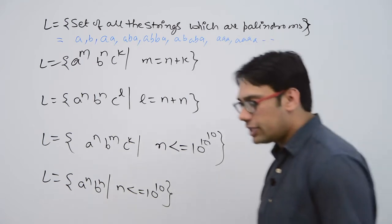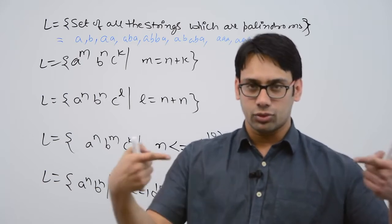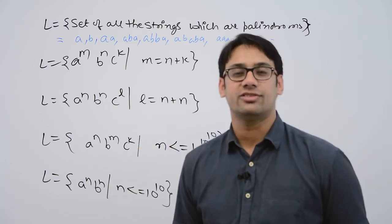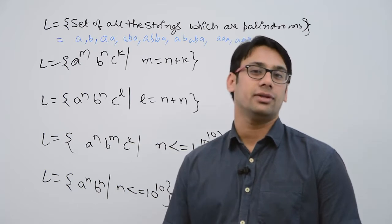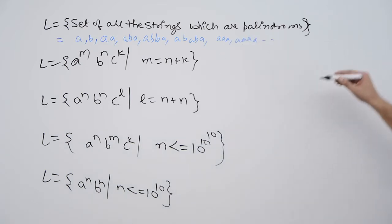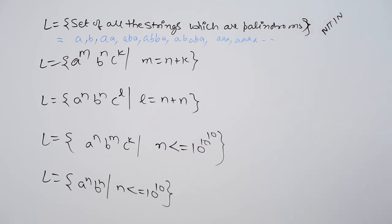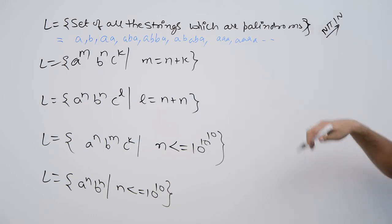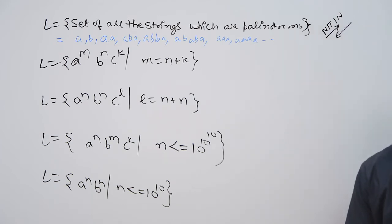When I say palindrome, palindrome means if you read the string from the start or from the end, in both directions you should be able to read the same string. For example, consider the English word 'Nitin' — N, I, T, I, N. Even if you read 'Nitin' from left to right or from right to left, 'Nitin' is a palindrome.